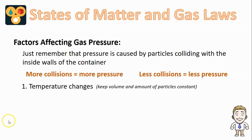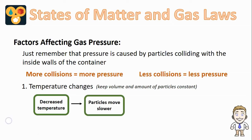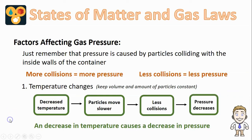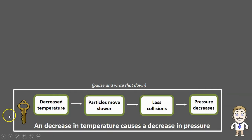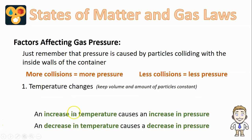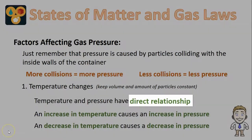All of the opposite changes are true for a decrease in temperature as well. If you make the gas colder, particles will be moving more slowly. If they're moving slower, they're going to be colliding less, and if they're colliding less, we're going to get less pressure. So a decrease in temperature causes a decrease in pressure. Putting both statements side by side, an increase in one causes an increase in the other, or a decrease in one causes a decrease in the other — a type of relationship we know as a direct relationship.